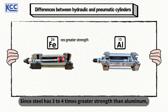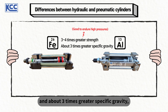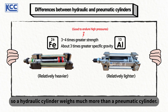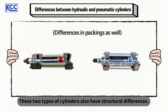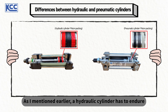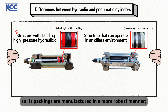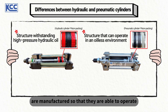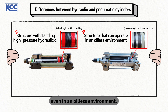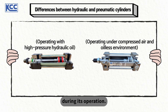Since steel has three to four times greater strength than aluminum, it has the advantage of withstanding the high pressure of hydraulic oil, and with about three times greater specific gravity, a hydraulic cylinder weighs much more than a pneumatic cylinder. These two types of cylinders also have structural differences. A hydraulic cylinder has to endure relatively higher pressure than a pneumatic cylinder, so its packings are manufactured in a more robust manner. Packings in a pneumatic cylinder are manufactured so that they are able to operate even in an oil-less environment, whereas a hydraulic cylinder has a structure that helps endure high-pressure hydraulic oil during operation.